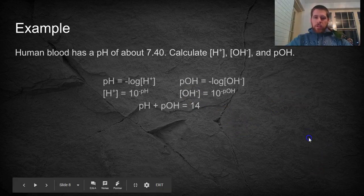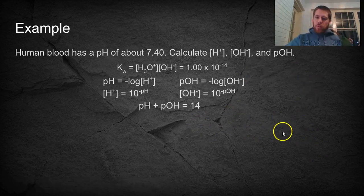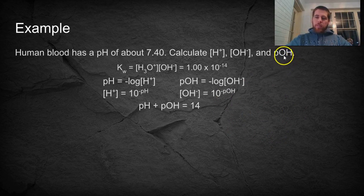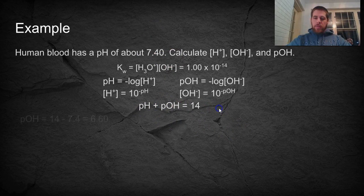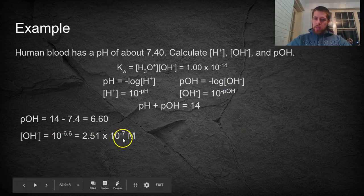All right, welcome back. Here's our equations that we can use, and so there's lots of different ways you can do this. Let's start with the easy one. Calculating pOH. We have the pH, we know that the pH and the pOH have to add up to 14, and so just subtract from 14, and you end up with 6.6. Now that we have the pOH, we can find the OH concentration. Take 10 to the negative pOH, the negative 6.6, and we have the OH concentration, and that's always in molarity.